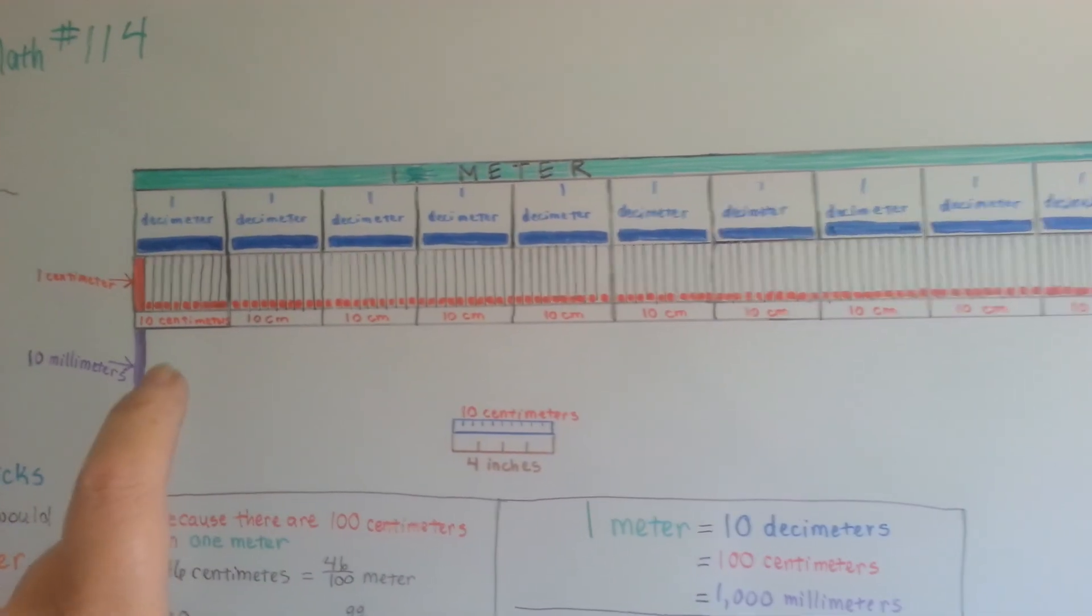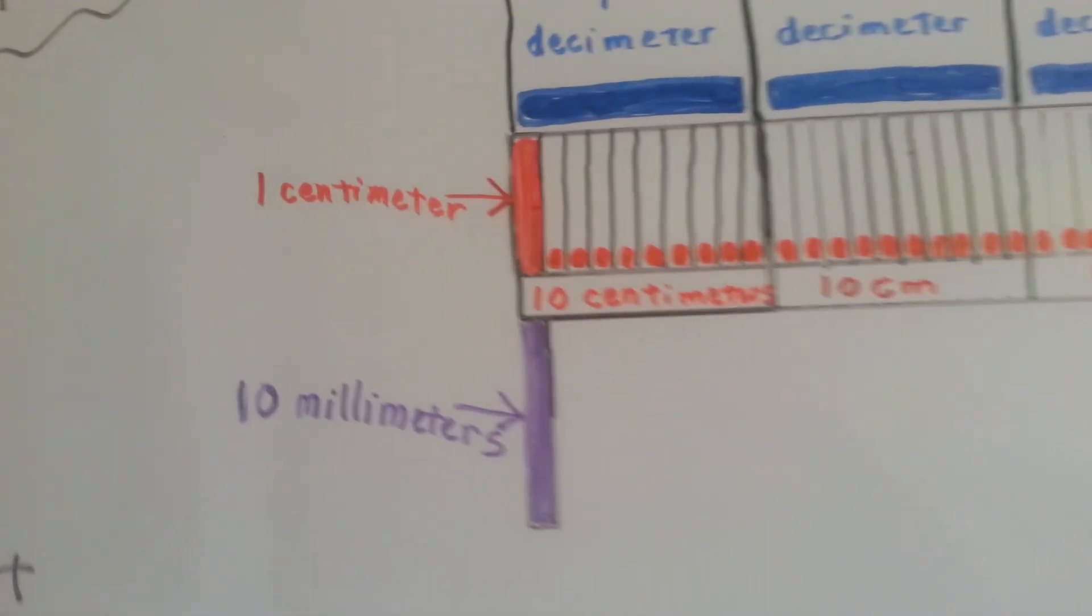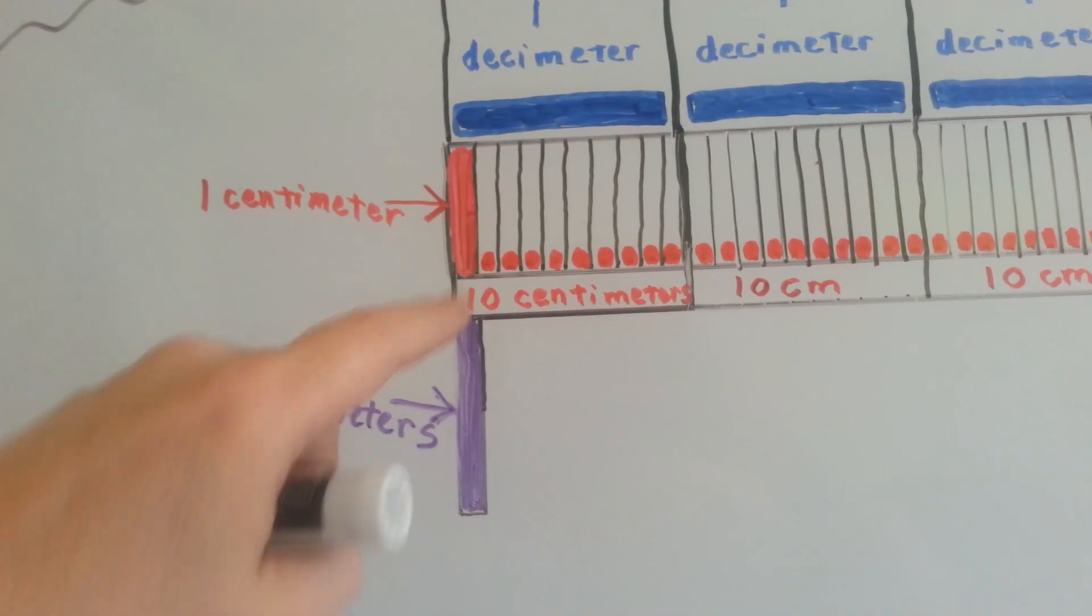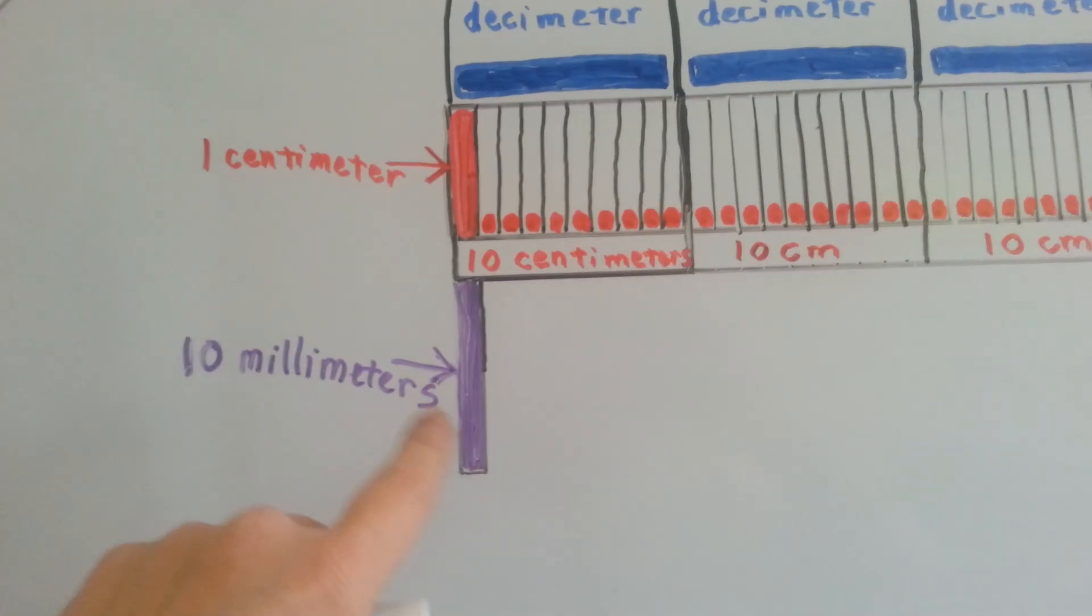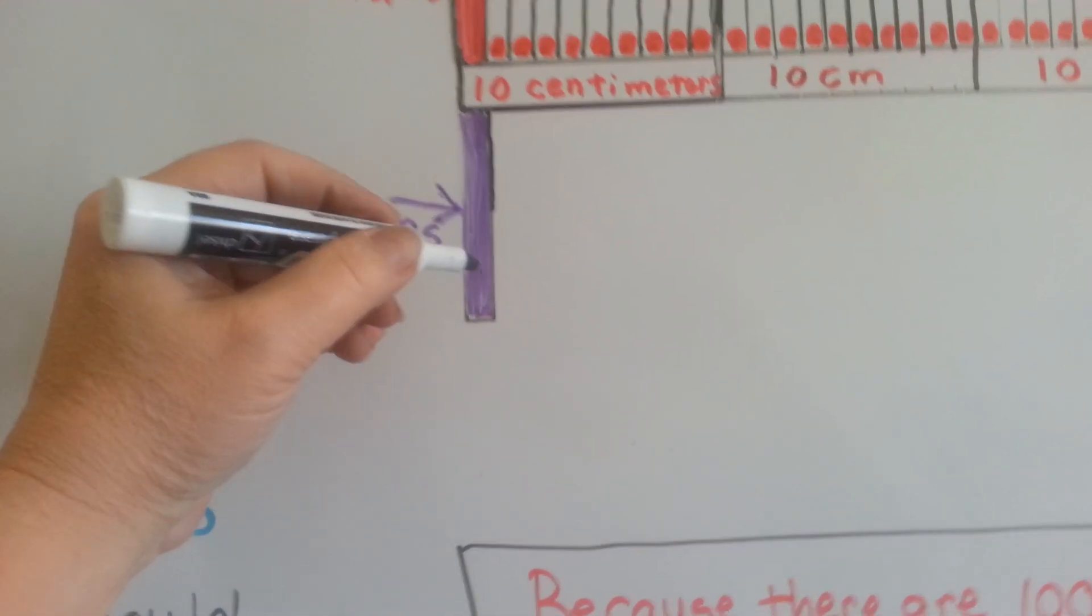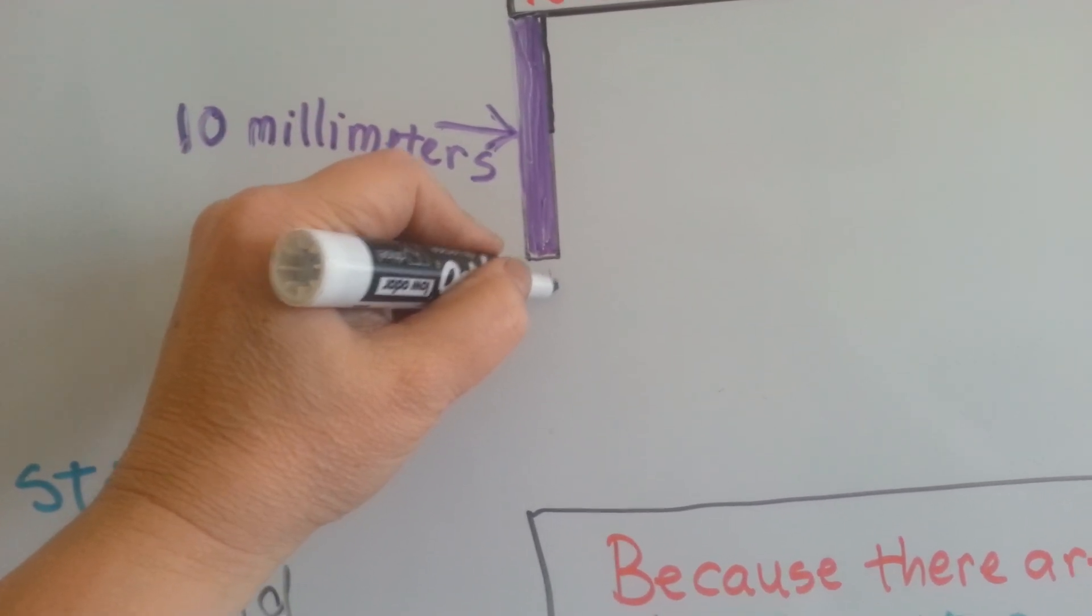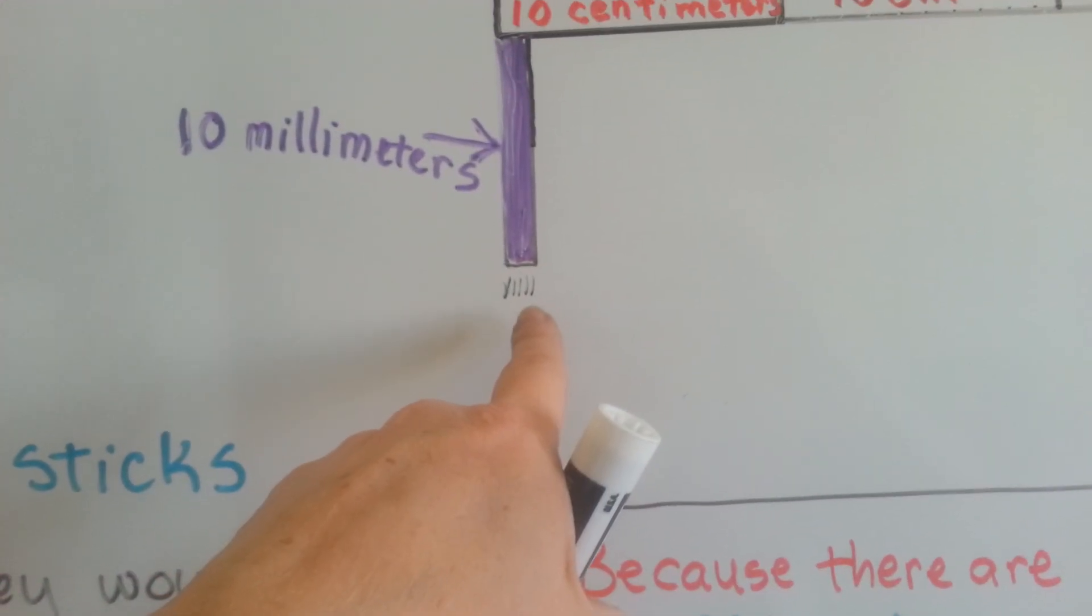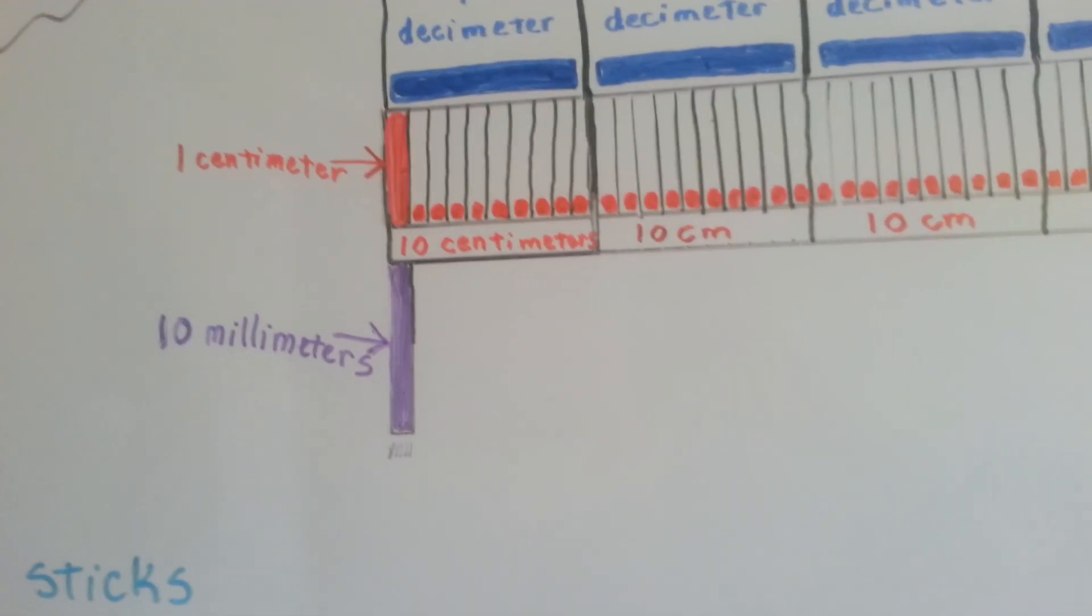And then the purple are millimeters. If you look really closely here, this one red bar is one centimeter. Well, my markers were too fat. I couldn't do it. There's ten millimeters in this purple line. I couldn't make them small enough. That's just five. I needed to squeeze ten in there. That's how tiny millimeters are.